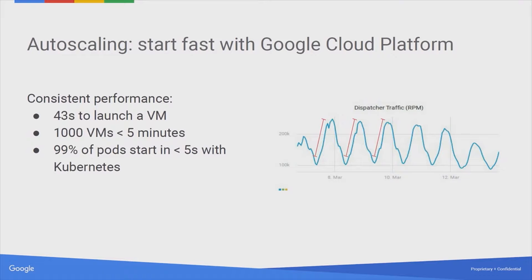As fast as possible on Google Cloud Platform means 40 seconds to launch a VM — 40 seconds to launch a virtual machine. And that's homogeneous. It doesn't matter if you're starting too many machines at the same time; you're going to start thousands of VMs simultaneously and still experience 40 seconds to start each one as an average. And if you're working with containers and Kubernetes, it gets even better — you can get a pod started in five seconds at the 99th percentile.